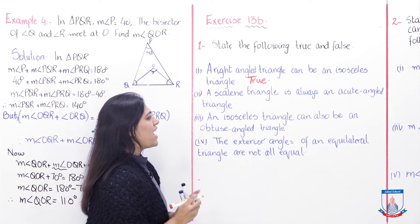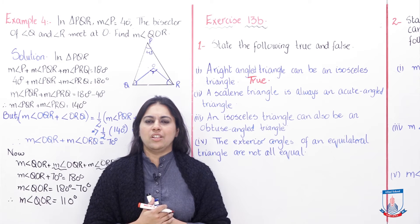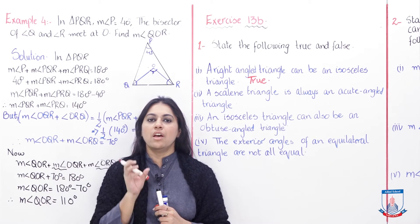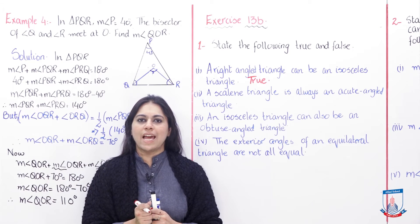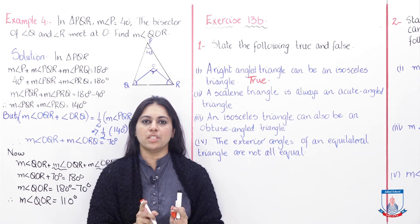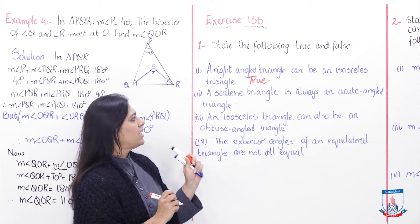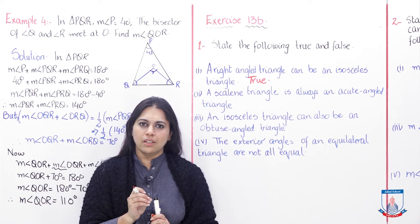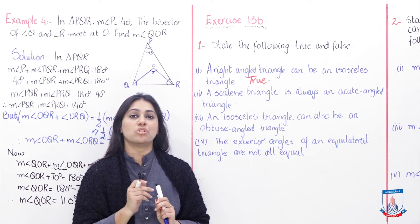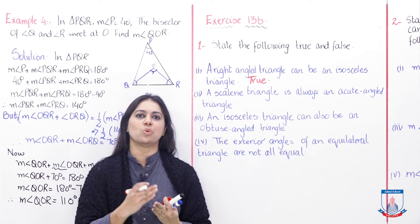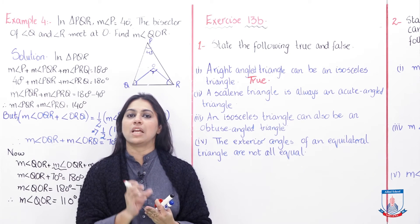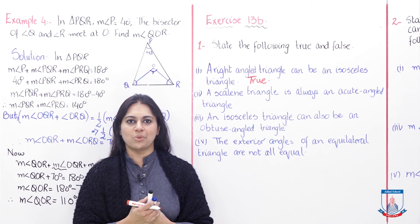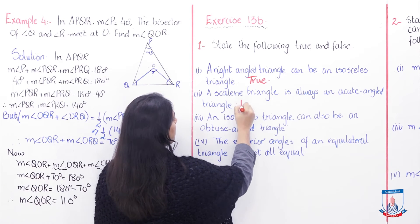Now the second part: a scalene triangle is always an acute angle triangle. A scalene triangle is classified according to its sides — all three sides are different. But is it always acute? No, because that is a false statement. A scalene triangle only tells you about the sides, not the angles. It can be acute, obtuse, or right-angled. So this statement is FALSE.